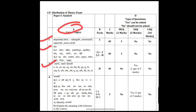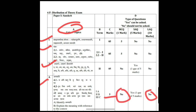The third topic is Upasarg. It also carries 5 marks, with no MCQs and no 10 mark questions — only one question of 5 marks. The fourth topic similarly carries 5 marks, with no MCQs and no 10 mark questions; only one short answer question of 5 marks.